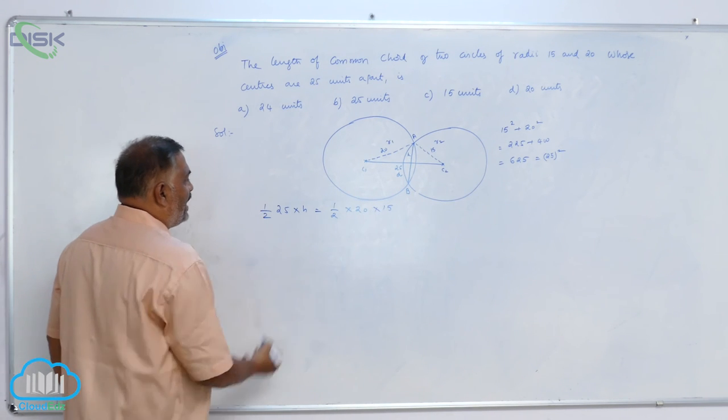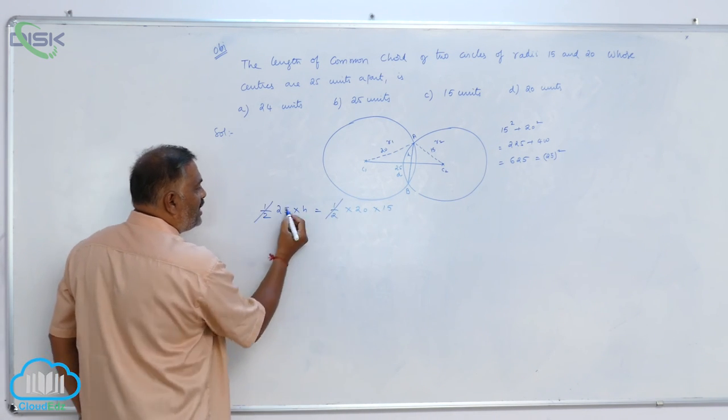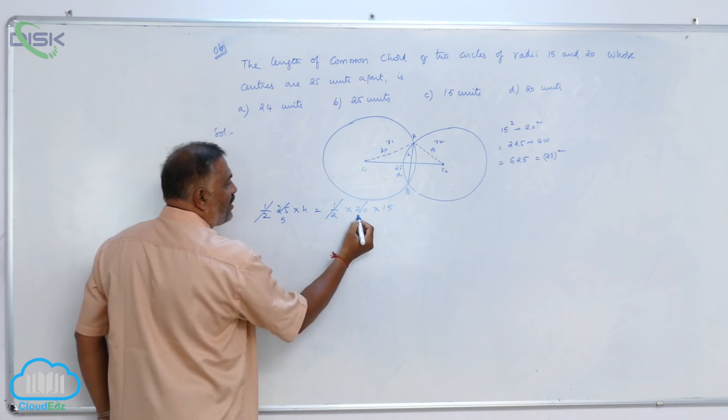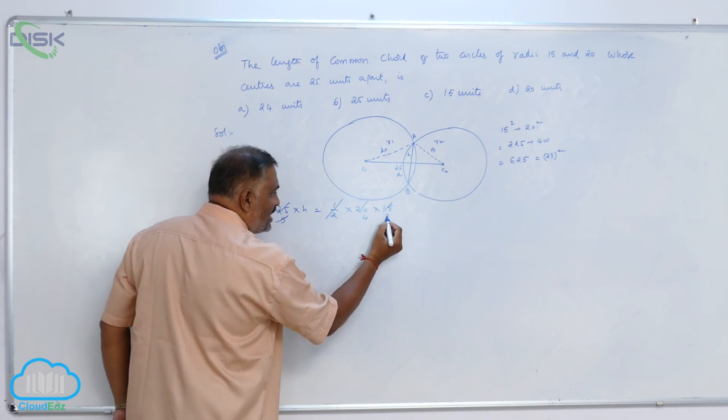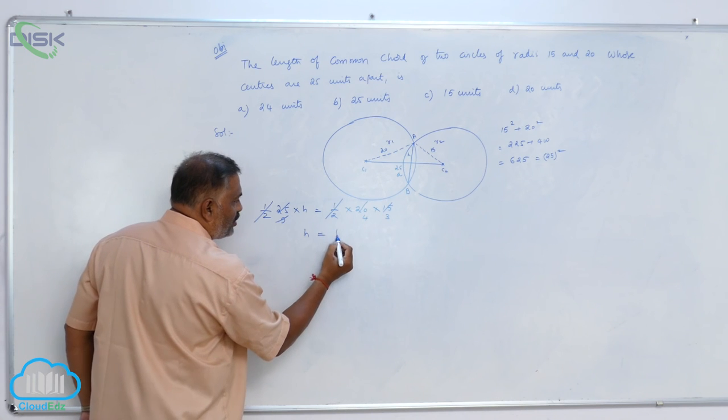Calculate H. Half gets cancelled. Five fives are, five fours are. Again, five threes are. So H is equal to 12.